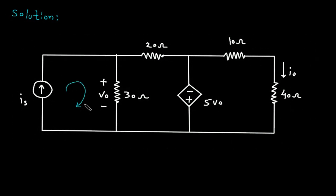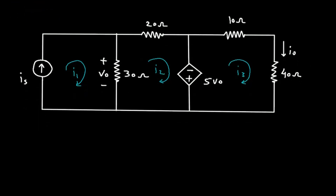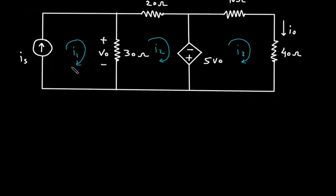Let's assume this is mesh number 1 with current I1, this is mesh number 2 with current I2, and this is mesh number 3 with current I3. As we can see, I1 is equal to IS and I3 is equal to IO.